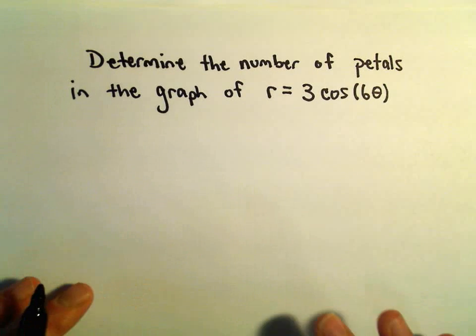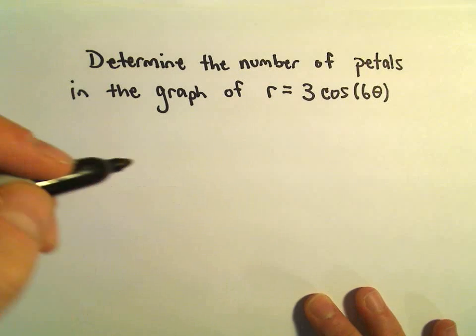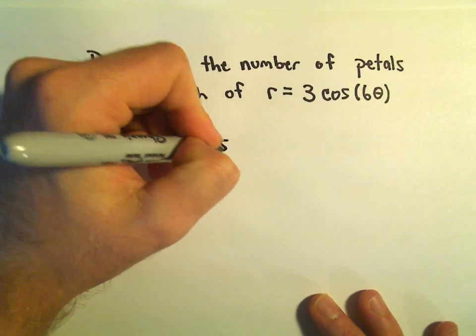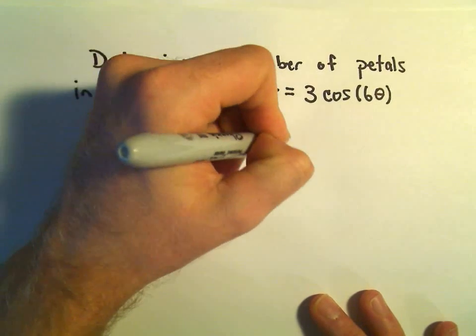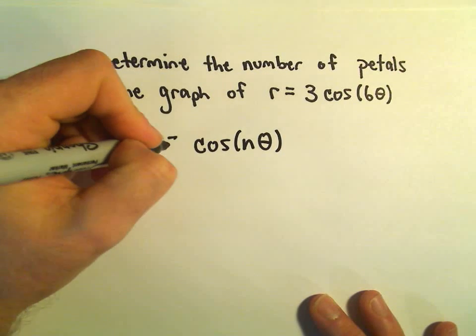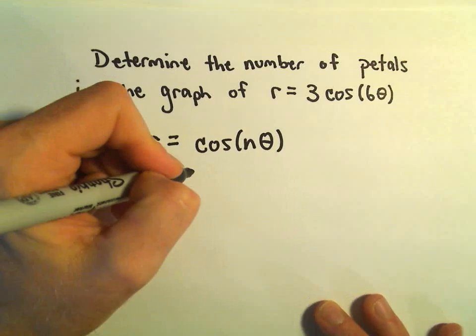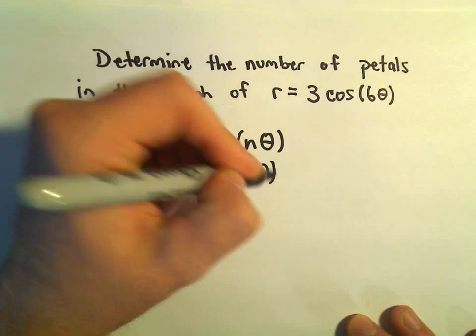So, a useful result here. When you have something like cosine of n times theta, the 3 out front won't affect the number of petals. Likewise, you could have r equals sine of n theta.